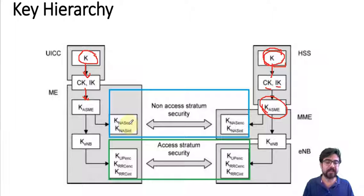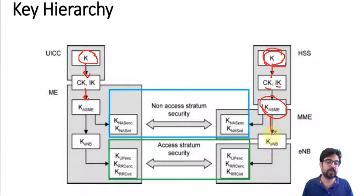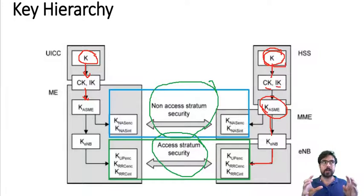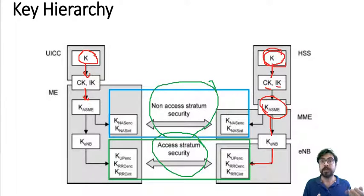On the UE side, the UICC also has K and generates CK and IK, sharing them to the ME. The ME then generates KASME, and from KASME it generates three more codes: K-NAS-Security, K-NAS-Encryption, and K-eNB. From K-eNB it further derives encryption, security, and integrity keys. Similarly, the MME uses its KASME to generate K-NAS-Security, K-NAS-Encryption, and K-eNB, forwarding K-eNB to the eNodeB.